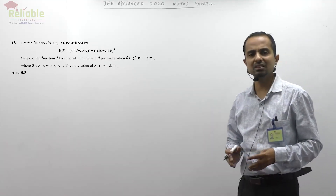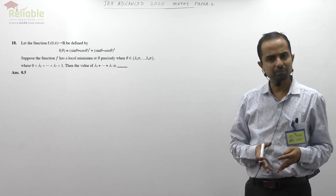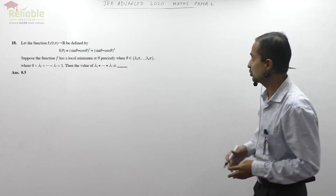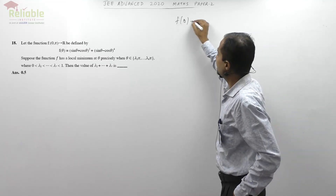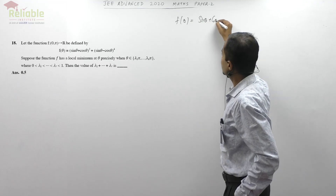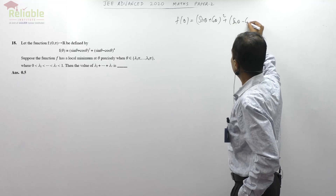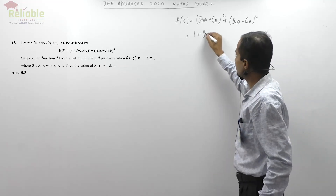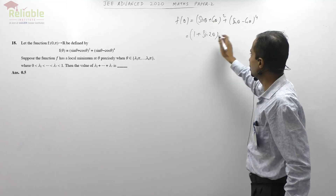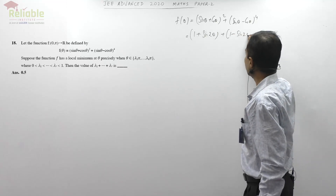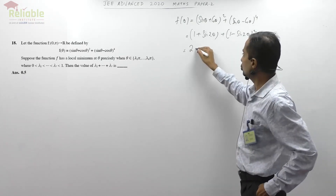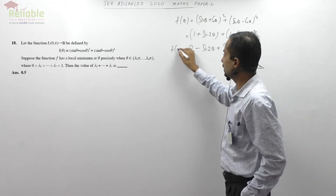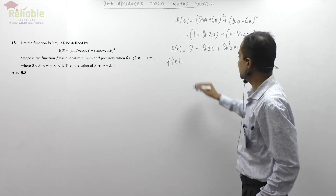Now question 18 is from maxima and minima — and this year, as you must have seen in papers 1 and 2, there were so many questions on maxima, limits, continuity, and derivatives. Differential equations was the king of Advanced 2020. The question: f(θ) = (sinθ + cosθ)^4 + (sinθ - cosθ)^4. We need to find local minima. Simplifying: using sin²+cos²=1 and 2sinθcosθ=sin2θ, we get f(θ) = 2 - sin²2θ + sin²2θ... expanding gives f(θ) = 2(2 - sin2θ)... let me clarify: f(θ) = 2 - sin2θ + sin²2θ.